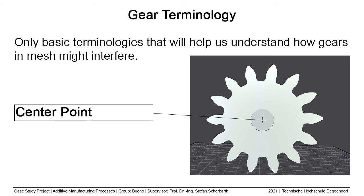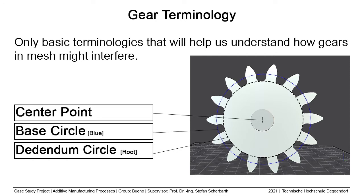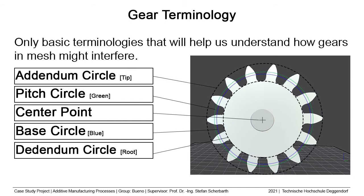First we have the center of the gear, which is the axis of rotation. Then there is the addendum circle, or root circle, which coincides with the bottom of the teeth of the gear. Then we have the base circle, which is used to derive the involute curve of the tooth. The pitch circle has the radius of where the meshing between another gear happens. Finally, the addendum circle has the radius of the outer edge of the tips of the teeth.